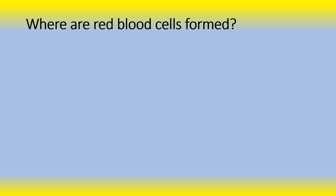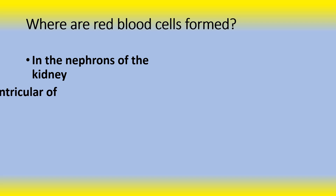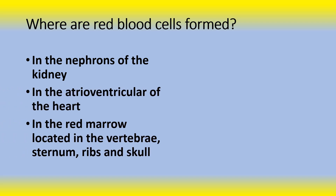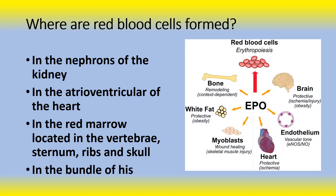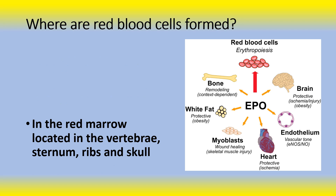Next question: Where are red blood cells formed? Is it in the nephrons of the kidney? Is it in the atrioventricular node of the heart? Is it in the red marrow located in the vertebrae, sternum, ribs, and skull? Or is it in the bundle of His? The answer is in the red marrow located in the vertebrae, sternum, ribs, and skull. Red blood cell formation — also called erythropoiesis — occurs in the red bone marrow located in those bones, and also in the pelvis and proximal limb bones. It is the production of hemoglobin-containing red blood cells for oxygen delivery to the tissues of the body.